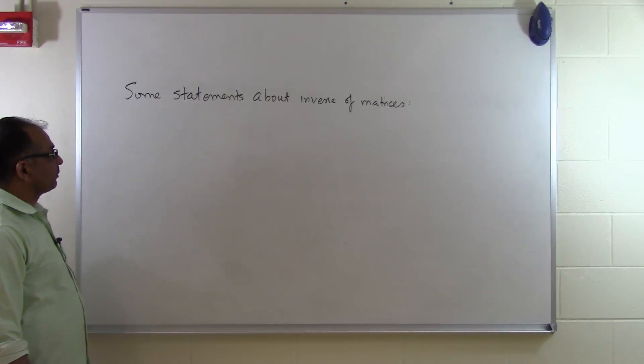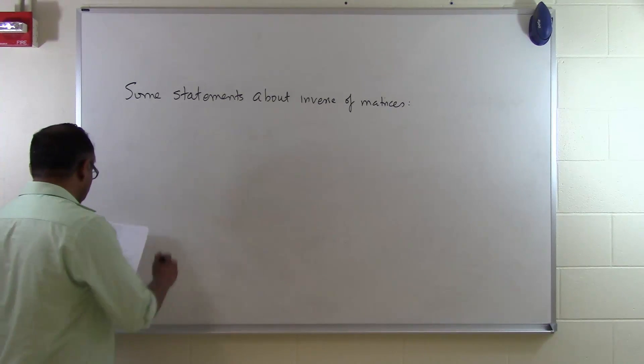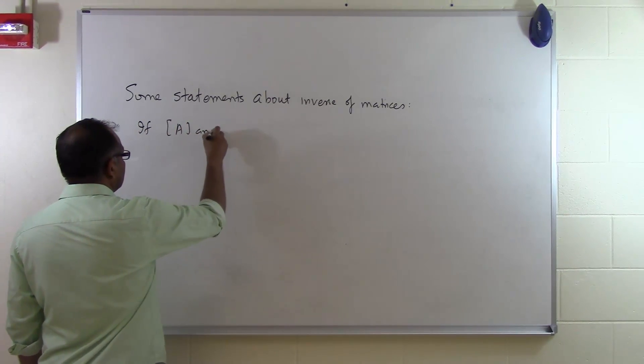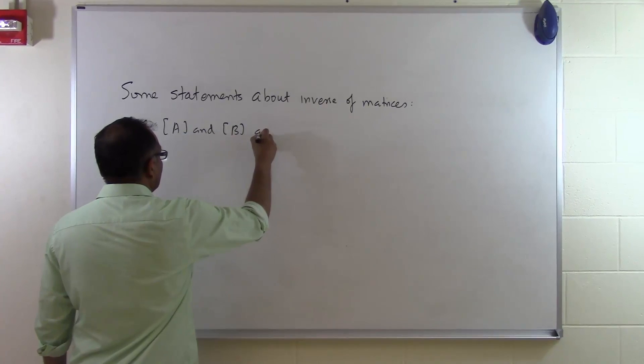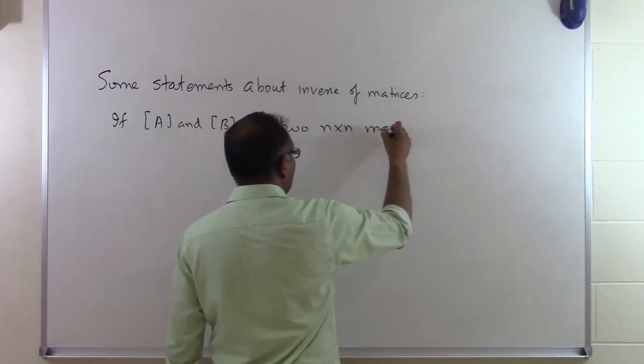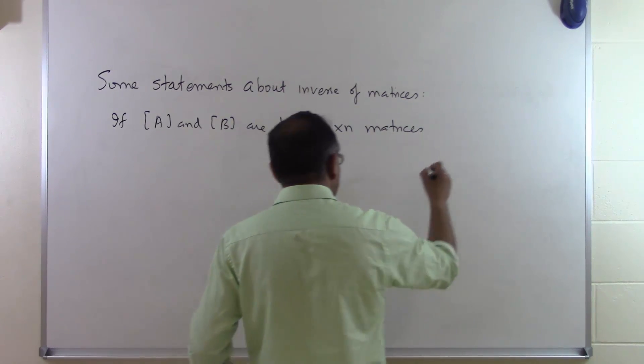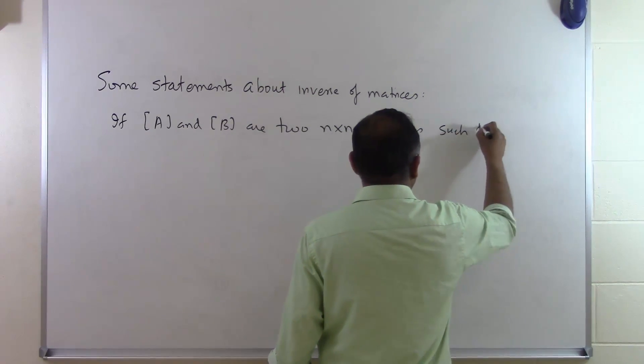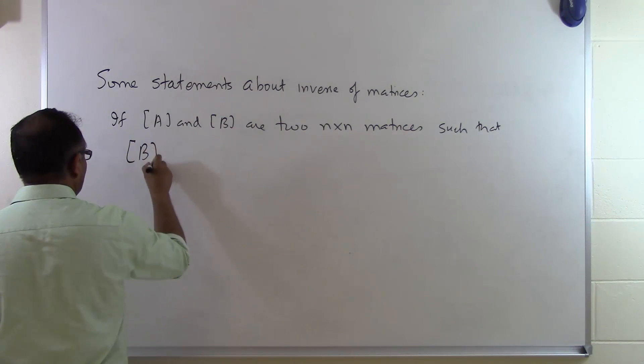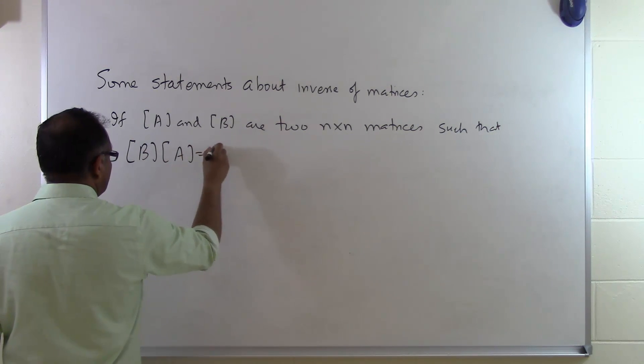Let's talk about some statements about inverse of matrices. If A and B are two n by n matrices, we are talking about square matrices, such that B times A is equal to I.